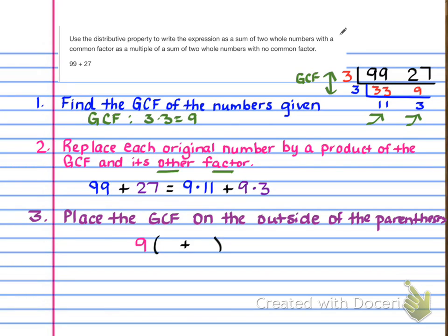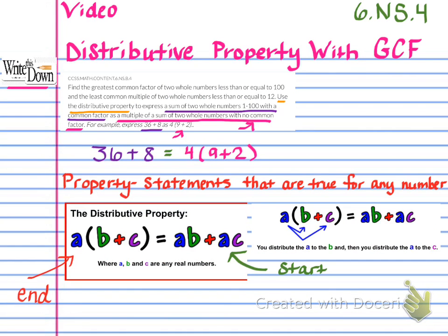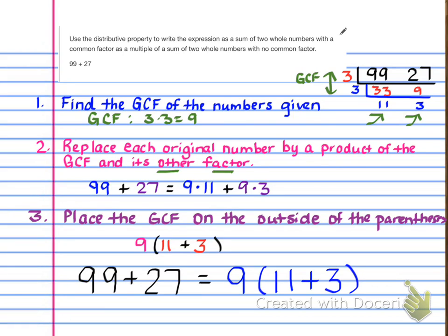Now we place the greatest common factor — the 9 — on the outside of the parentheses, then put the leftover factors, 11 plus 3, inside the parentheses. Your final problem looks like this: 99 plus 27 equals 9 times (11 plus 3). Bringing it back to the standard: it says a multiple of a sum of two whole numbers with no common factor — that's exactly what we did. We now have two whole numbers, 11 and 3, with no common factor, because we pulled out their greatest common factor of 9.